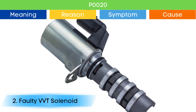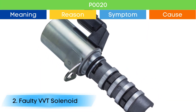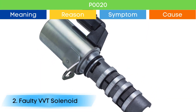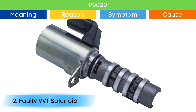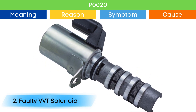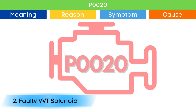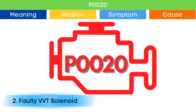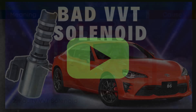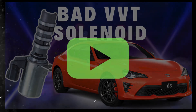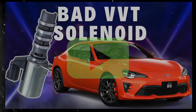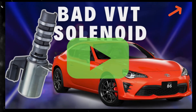Cause number two: bad VVT solenoid. Due to a bad VVT solenoid, the camshaft position advance and delay may not work properly, which may trigger P0020 and other OBD2 codes related to the VVT solenoid, along with symptoms of a bad VVT solenoid. Check our detailed video to learn more about the symptoms of a bad VVT solenoid and related OBD2 codes — link in the corner.